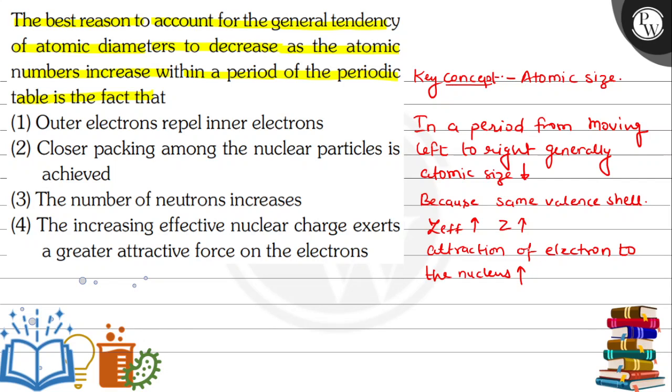So if we look at this: outer electrons repelling - this doesn't cause it. Closer packing - no role. Number of neutrons increases - neutron count has nothing to do with atomic charge. And the last one is increasing effective nuclear charge exerts greater attractive force on the electron. So this is what I wrote - attraction force of electrons to nucleus increases when Z increases, or when Z increases, Z effective also increases, atomic size decreases.